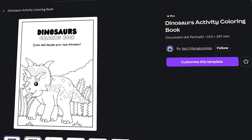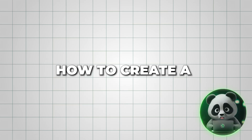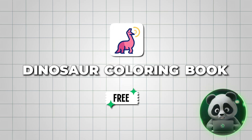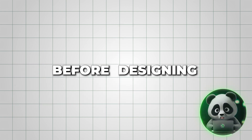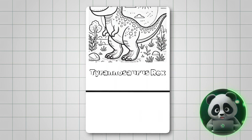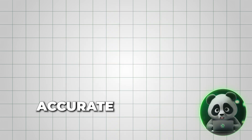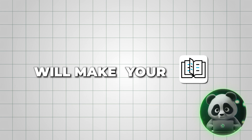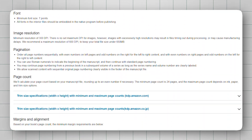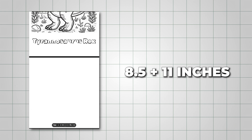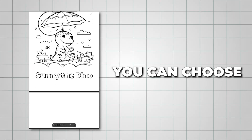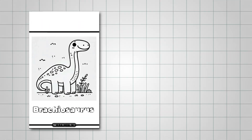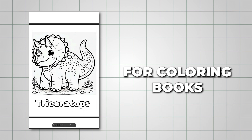However, it's only available for Canva Pro users. I'm going to show you how to create a dinosaur coloring book for free, so watch till the end. The first thing we need to do before designing is to establish the cover and page dimensions. This is a crucial step because accurate dimensions will make your book look polished and meet the requirements of Amazon KDP. We'll use 8.5 by 11 inches, giving us a rectangular book typical for a coloring book. You can choose any size that suits your preference.